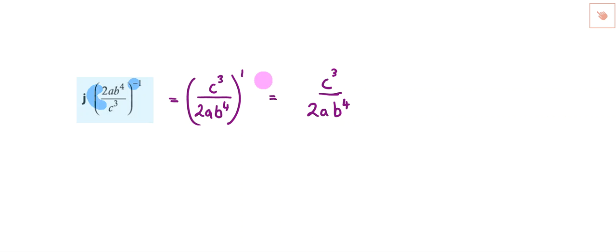Now of course, if this was a different number, say a 2, you'd have to have multiplied everything. So if I do the same problem, 2ab to the power of 4 over c cubed, but this time it was a negative 3, not a negative 1. Well, we'd start by replacing the negative and finding the reciprocal. So that would be c cubed divided by 2ab to the power of 4.